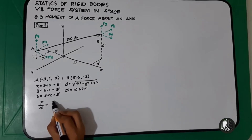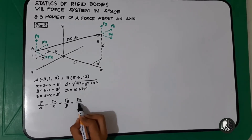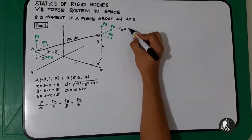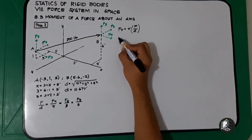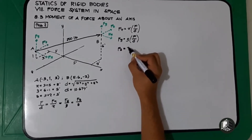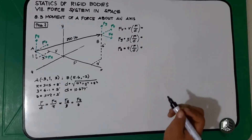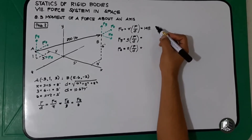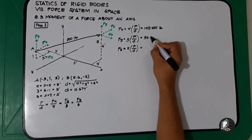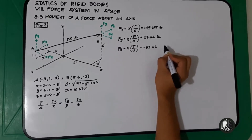Using proportionality: F over D equals Fx over x equals Fy over y equals Fz over z. Therefore Fx equals x times F over D, giving positive 149.855 pounds (positive because it's to the right). Fy equals Y times F over D, giving positive 93.66 pounds (upward). Fz equals Z times F over D, giving negative 93.66 pounds (backward).